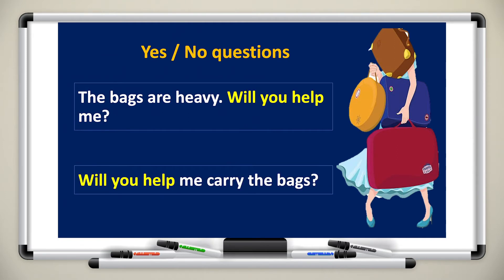We also use 'will' to form yes or no questions. For example: 'The bags are heavy, will you help me?' or 'Will you help me carry the bags?' These are yes or no questions. We place 'will' at the beginning of the sentence when forming a yes or no question.